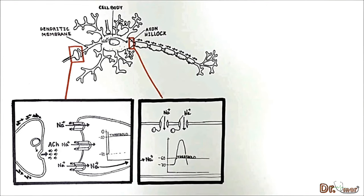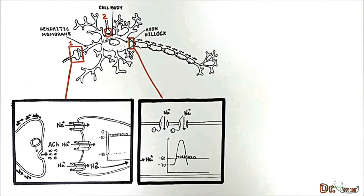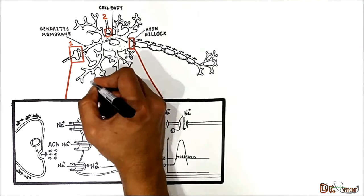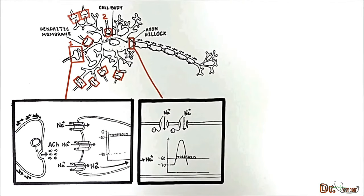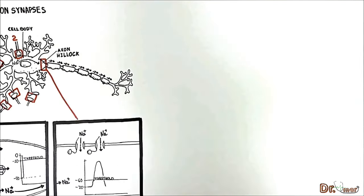Another important point is that the closer the synapse is to the axon hillock, the greater its influence in determining whether an action potential is generated. In other words, out of two synapses, the one closer to the axon hillock has a greater chance of generating an action potential. Additionally, in these synapses, an action potential in a presynaptic cell is insufficient to produce an action potential in a postsynaptic cell. Instead, many presynaptic cells converge on the postsynaptic cell, and the sum of these inputs determines whether the postsynaptic cell will fire an action potential.